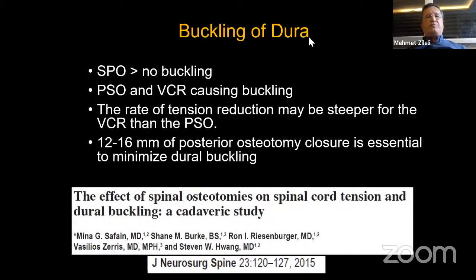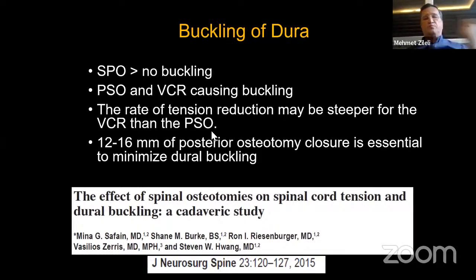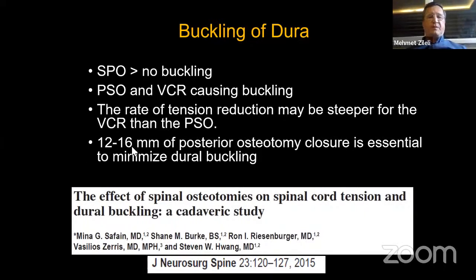Buckling of the dura is an issue — PSO and VCR may cause buckling, while grade 1 and 2 osteotomies do not cause significant buckling. The rate of correction may be steeper for VCR than PSO, so in vertebral column resection you must be more careful. Twelve to 60 millimeters post-osteotomy closure is essential to minimize dural buckling.